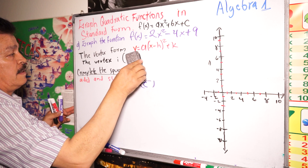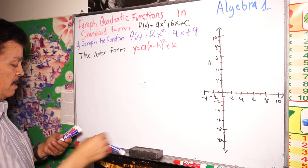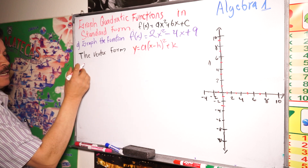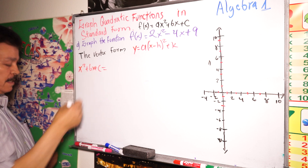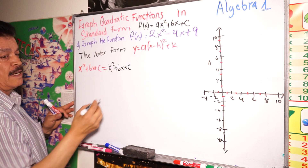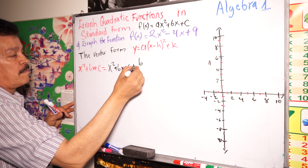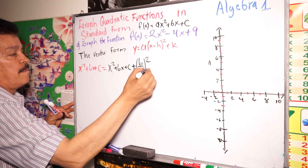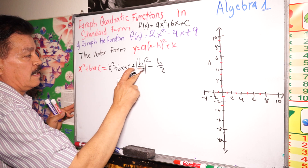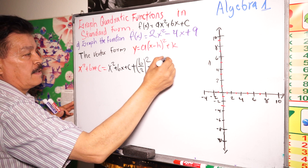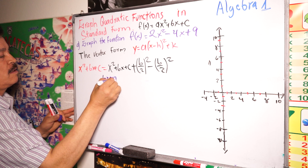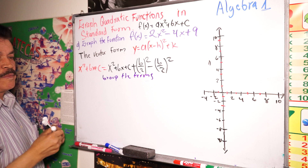Let me write the problem here. If we have the expression x squared plus bx plus c, we add (b divided by 2) squared and subtract (b divided by 2) squared. Then we group these terms together to make the perfect square trinomial.